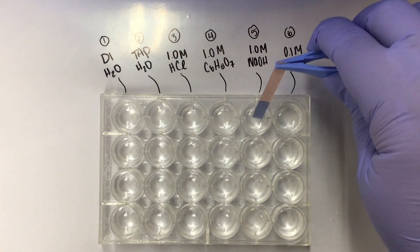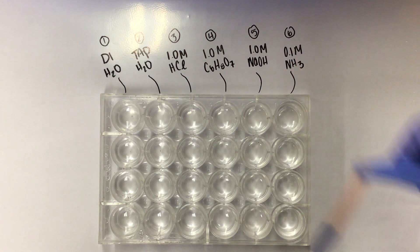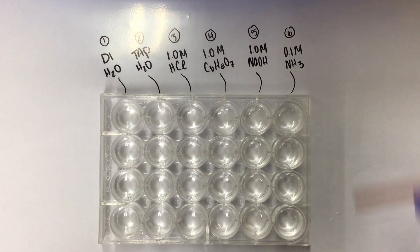Red litmus paper going into C6H8O7. NaOH. And lastly, NH3.